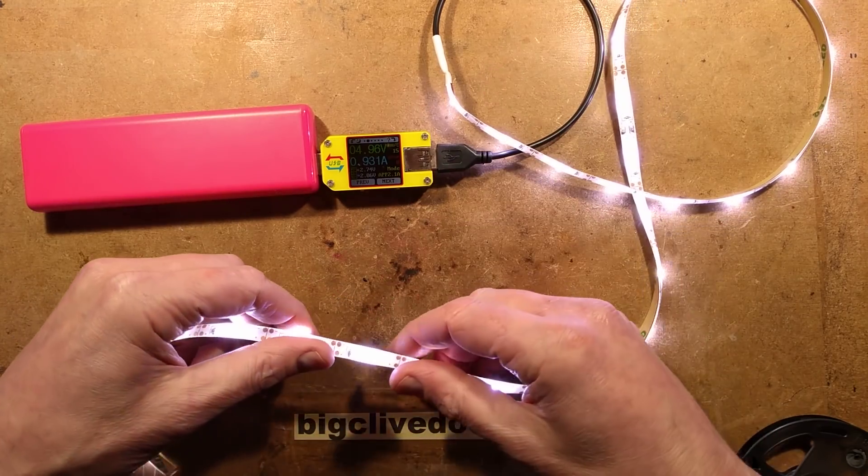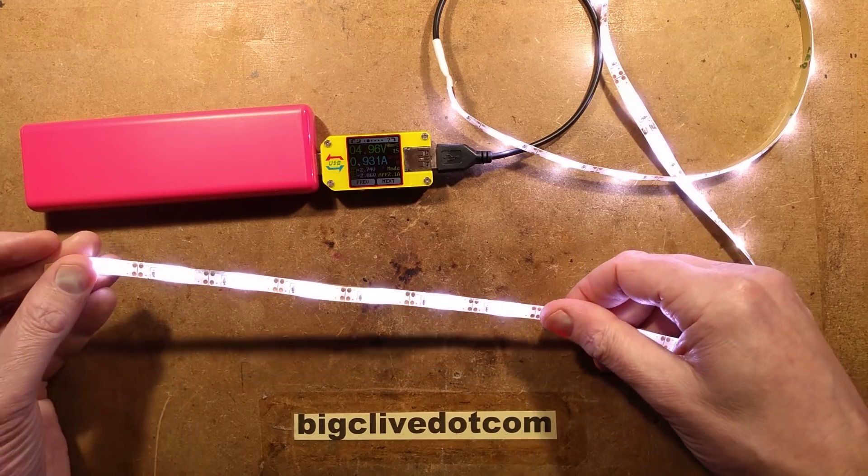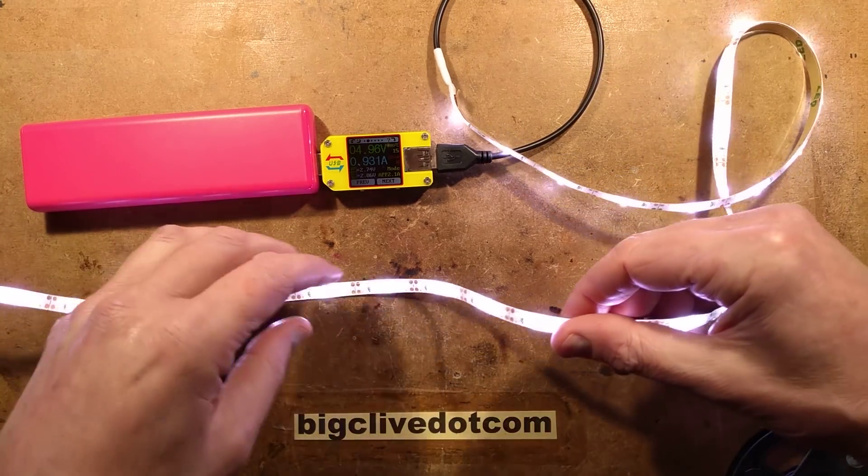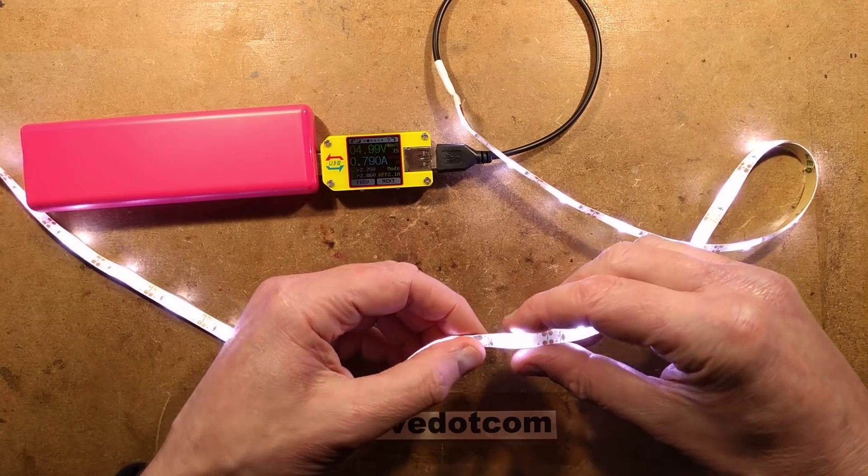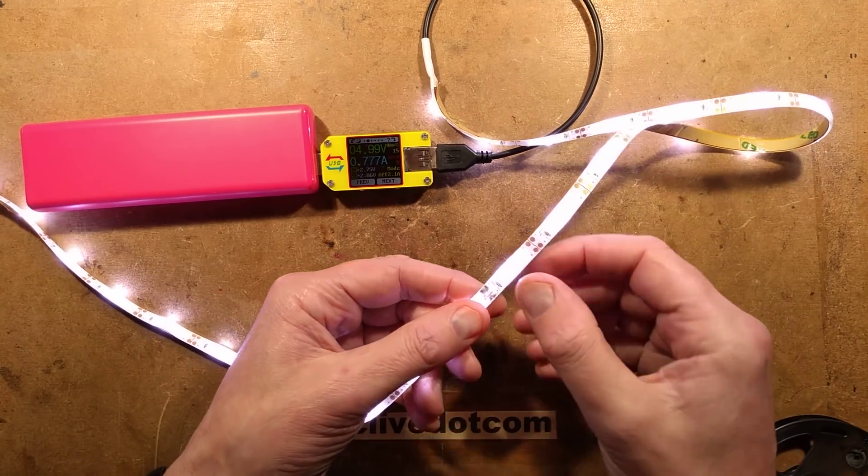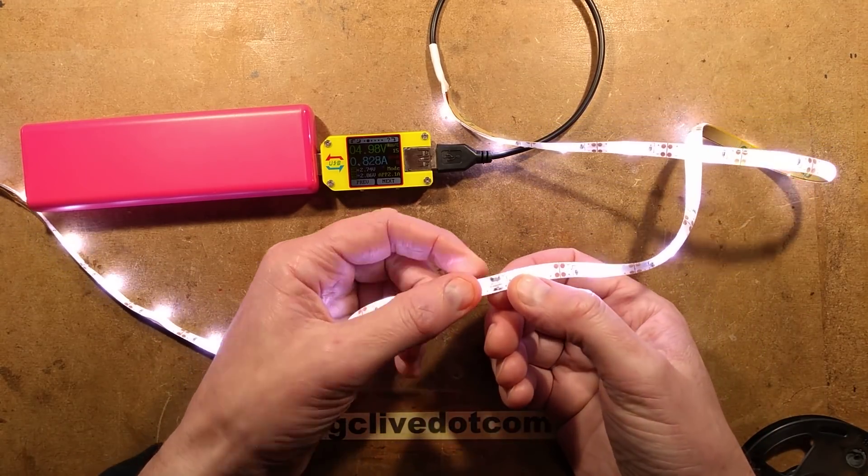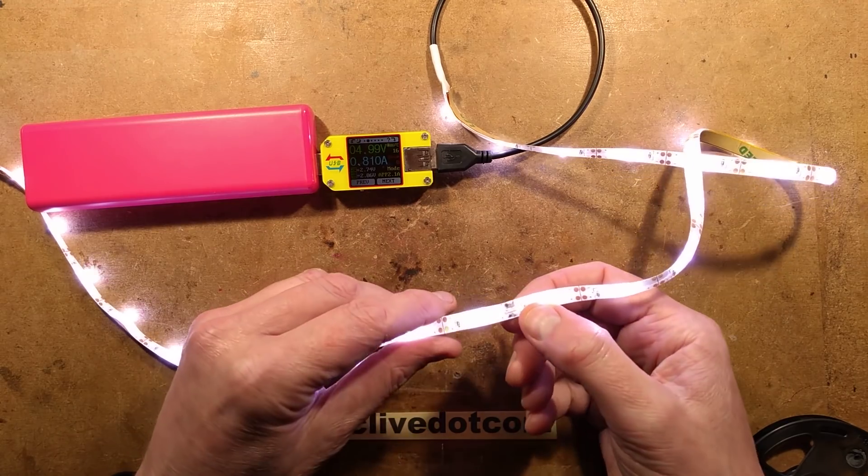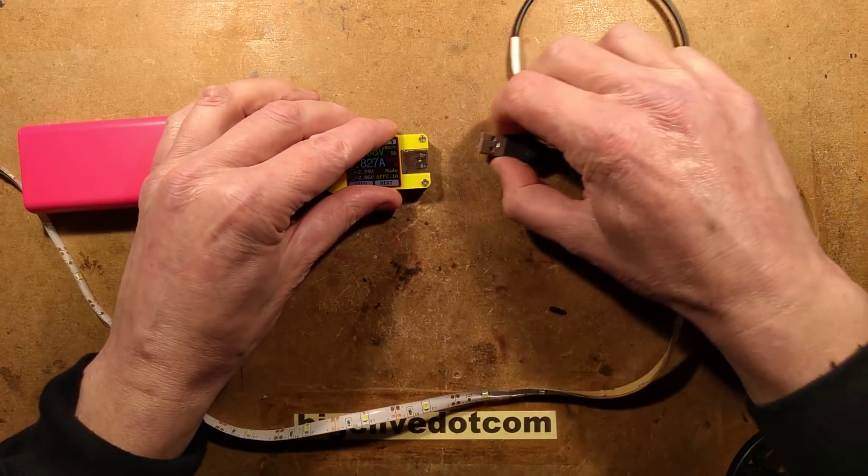Effectively, it's the best part of an amp at 5 volts, so we're talking about 5 watts along the strip. Things worth mentioning, it is standard strip that's measured in multiples of half a meter, because you can see the solder joints here where they've soldered. Let me just unplug it and you'll see those better.